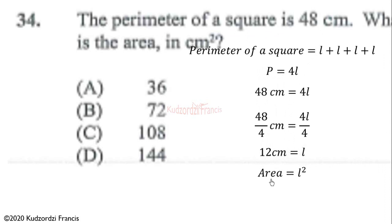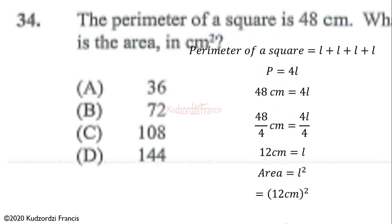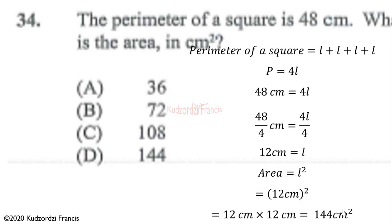The area of a square is l squared. So we square the side length: 12² = 144 square centimeters. Therefore the correct answer is 144 cm².